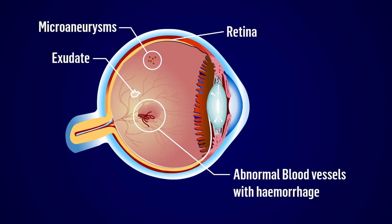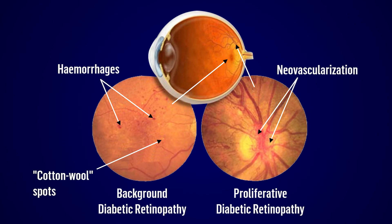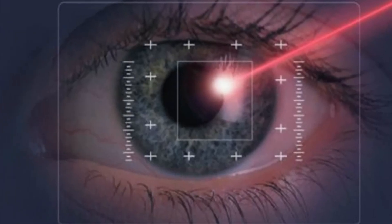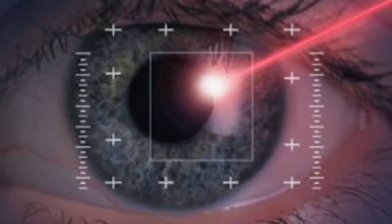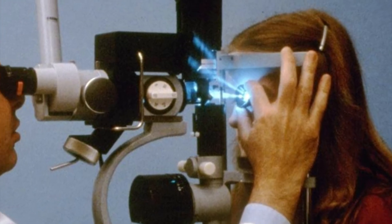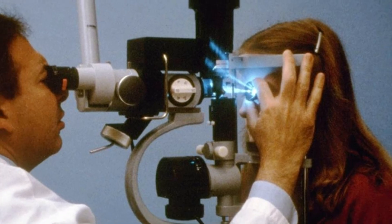Diabetic retinopathy is characterized by tiny aneurysms — balloon-like swellings of the capillaries, which are tiny blood vessels in the retina. New abnormal blood vessels, which are fragile and bleed readily, grow on the retinal surface. Hemorrhage into the vitreous humor may occur, and fibrous tissues can also grow forward into the vitreous humor. Treatment by laser surgery can often halt the progress of the condition.